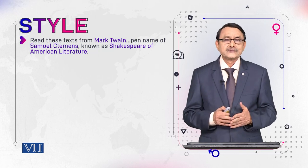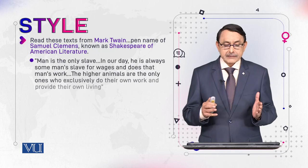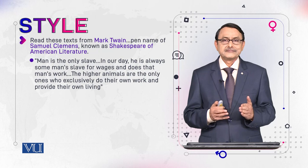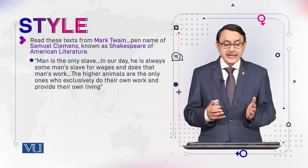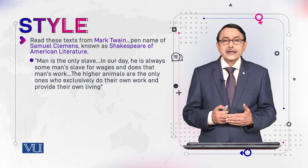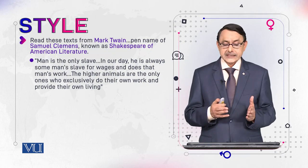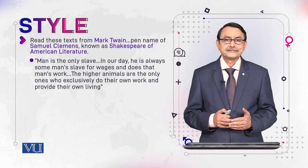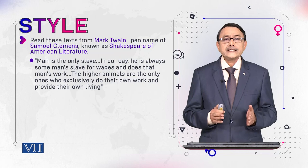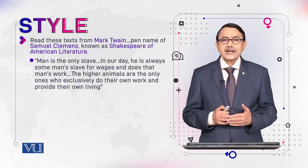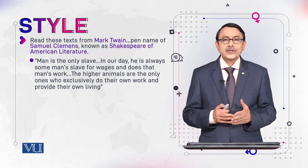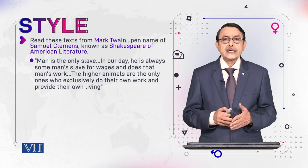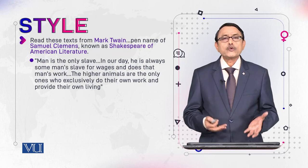This is an excerpt from his prose essay 'Damned Human Race.' He says: man is the only slave. In our day, he is always some man's slave — a slave for wages — and does that man's work in return for wages. The higher animals are the only ones who exclusively do their own work and provide their own living. So man is an animal, but other animals are higher animals, and he compares both on the basis of slavery. Man remains always a slave, but other animals work for their own living and existence.